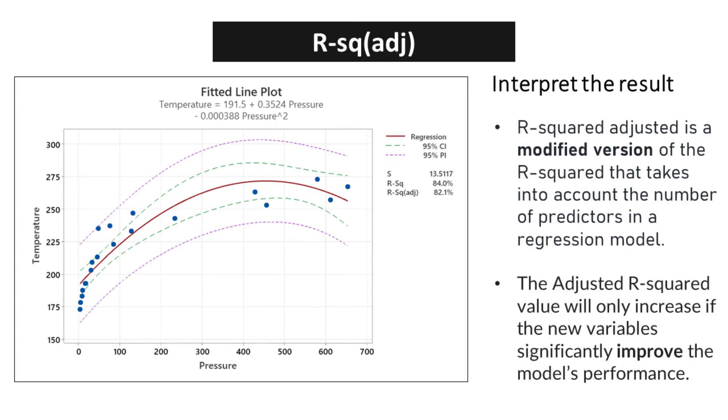R-squared adjusted is a modified version of R-squared that takes into account the number of predictors in a regression model. This is crucial because it helps us understand the true impact of the independent variables on the dependent variable.